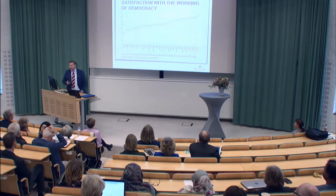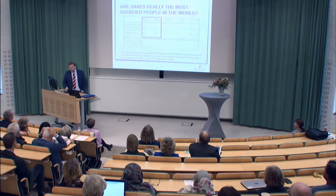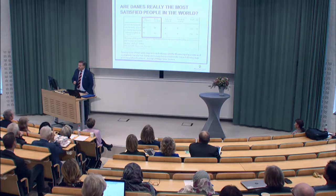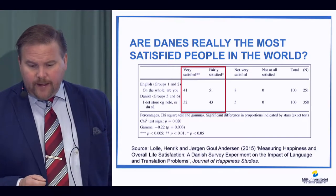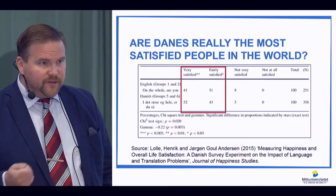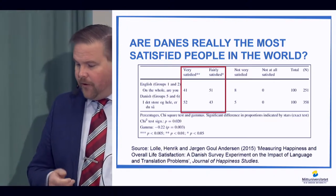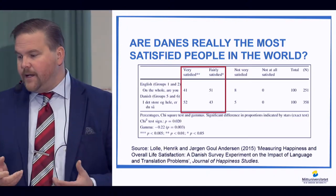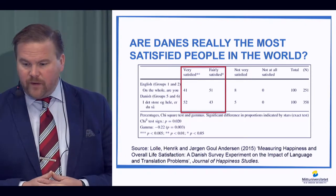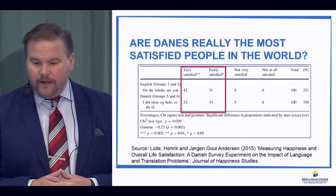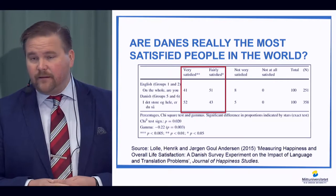Luckily, I was not the only one interested in this. When I started to look around, I found a really inspiring study by two Danish researchers in sociology — Henrik Lolle and Jørgen Goul-Andersen at Ålborg University. They had also noted this and thought perhaps it has something to do with translations. What they did was conduct a small experiment with university students being taught in English at Ålborg University.